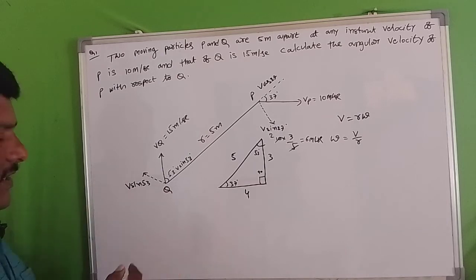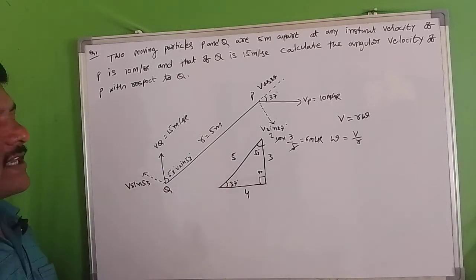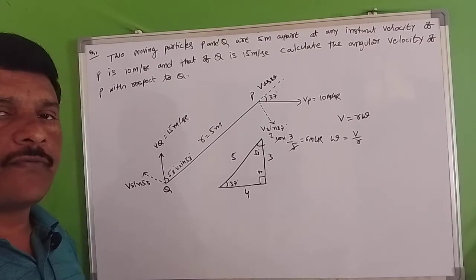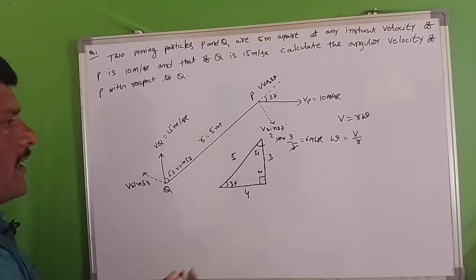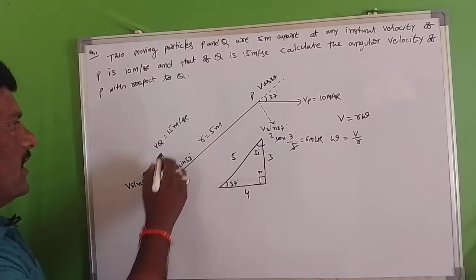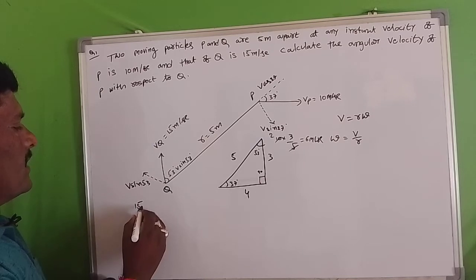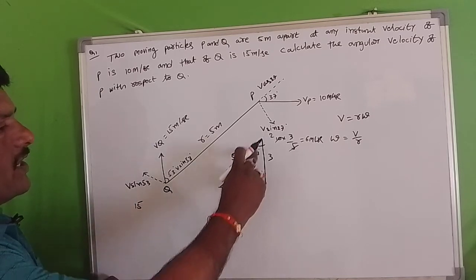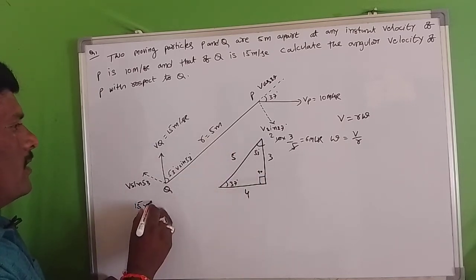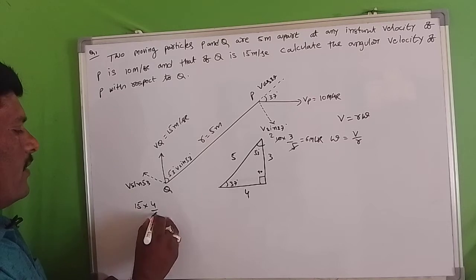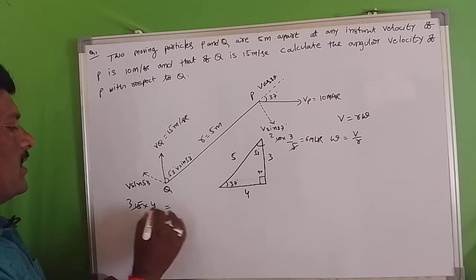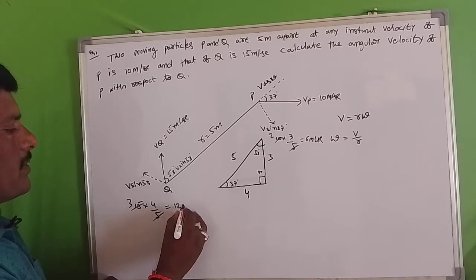Sin 53 degrees gives us: V where V is 15, sin 53 equals 4 by 5, so 15 times 4 by 5 equals 12 meters per second.